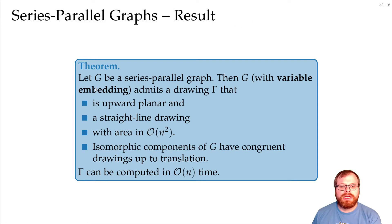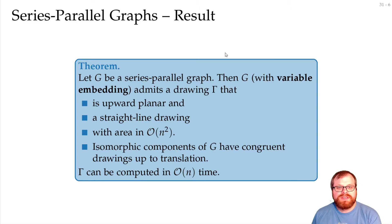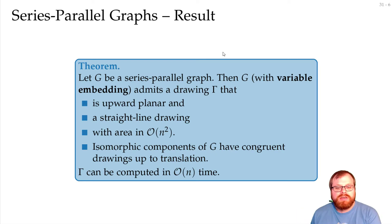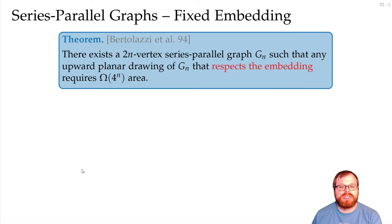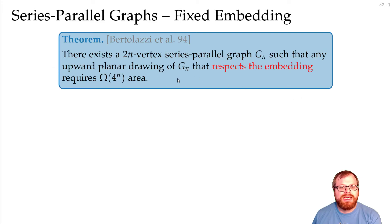Here we are allowed to change the embedding. However, sometimes for series-parallel graphs the embedding is important — you want to keep the orientation of all the edges. If we have a fixed embedding, then we cannot keep this quadratic area. In fact, Bertolasi et al. showed that we require exponential area. So there exists for every n a 2n-vertex series-parallel graph such that any upward planar drawing of it that respects the embedding requires Ω(4^n) area.